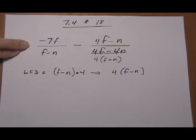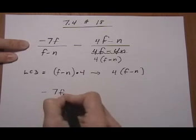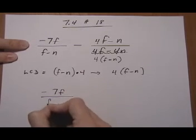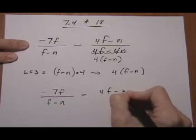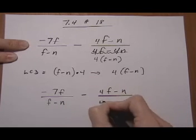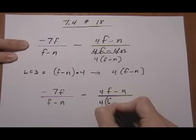Now we need to build new fractions that have the common denominator as their denominator. So we look to see what's missing in each one. So first I'm going to just rewrite what we started with here and I'm going to leave the denominator in factored form.